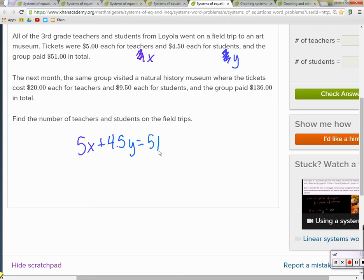The next one, so they're just telling us about another thing they went to do. They went to another museum, a history museum, not an art museum. Exact same kind of a situation. So, $20 each for the teachers, X is for teachers, plus $9.50 times Y. And that comes out to be $136.